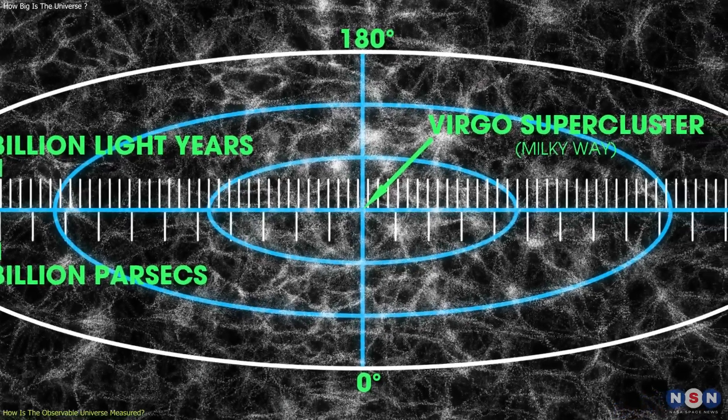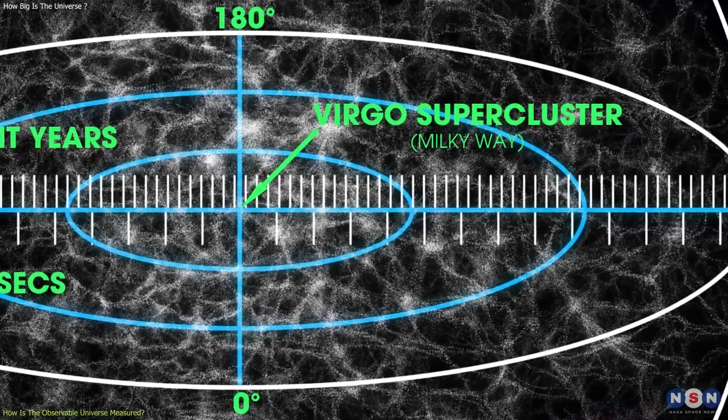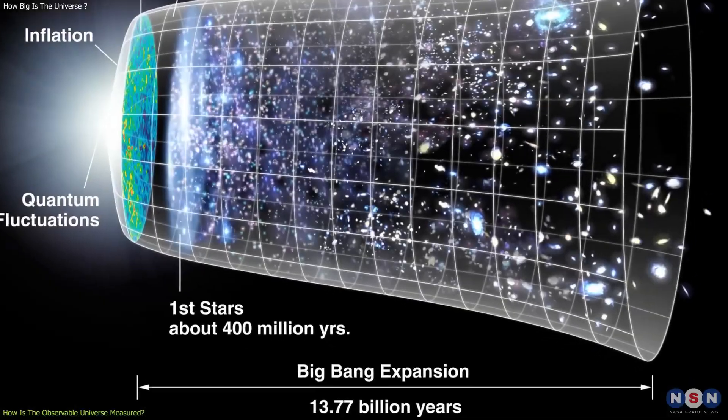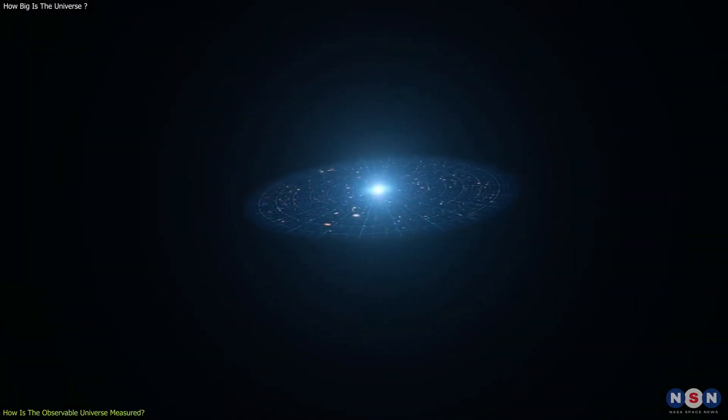To measure the radius of the observable universe, we need to know two things. The age of the universe, and the rate of the universe's expansion.